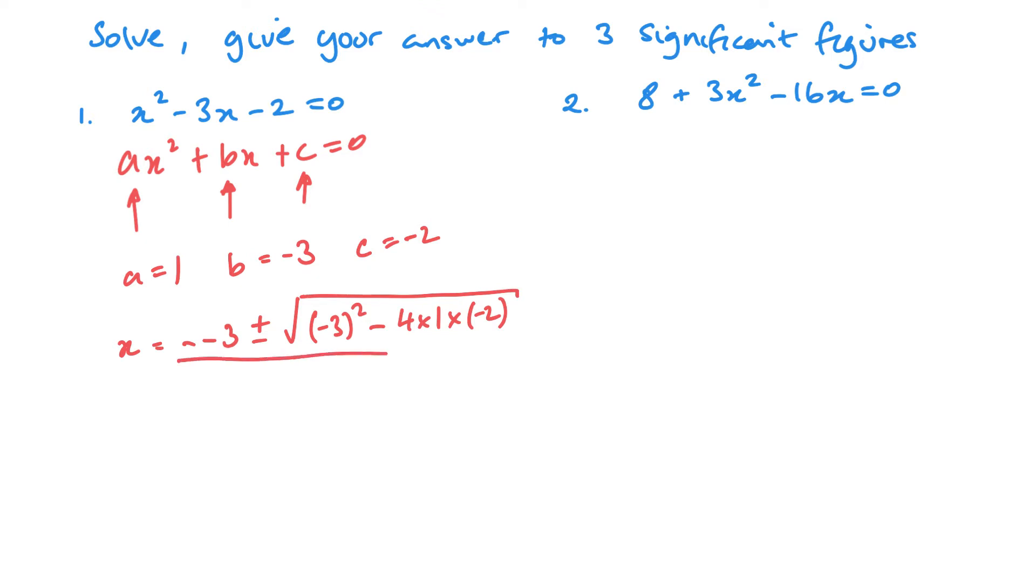And then all of that is over 2 times A, which is 1 in this case. So let's have a look. So we've got minus minus 3, so that's just a positive 3. Plus or minus square root. Now 3 squared is 9. I'll take the extra steps this time. 4 times 1 times minus 2 is minus 8. So we're going to be taking away minus 8. So it's the same as adding 8 there. And all of that is going to be over 2.